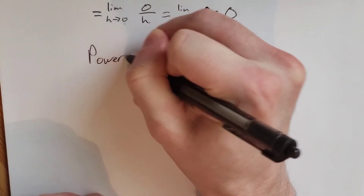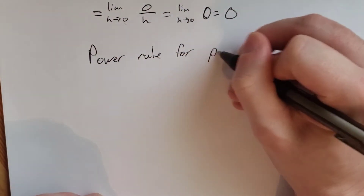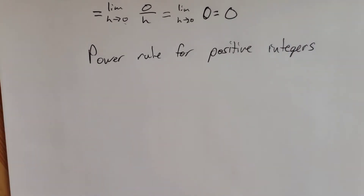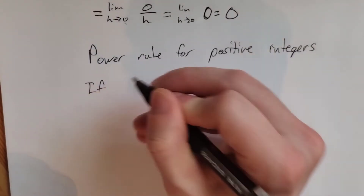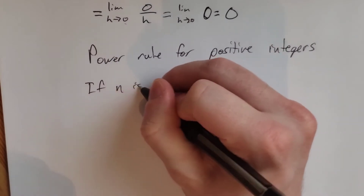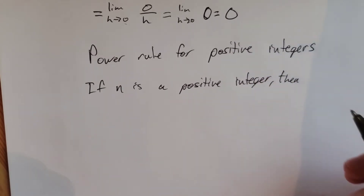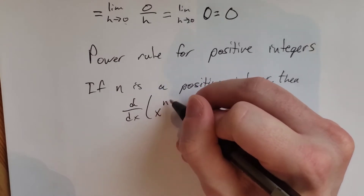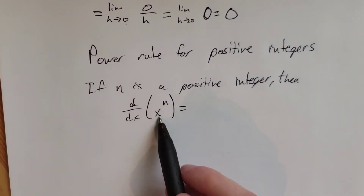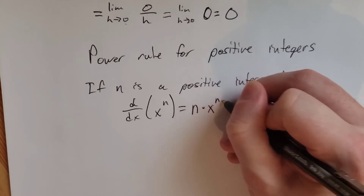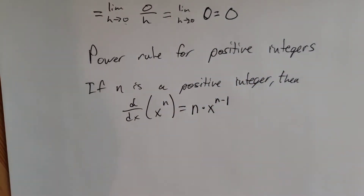Let's do another rule: the power rule for positive integers. We're going to generalize this in just a few minutes, but the only proof we can do right now is for positive integers. The rule is: if n is a positive integer, then the derivative of x to the n — some variable x raised to the nth power — is n times x to the n minus 1. That would be our derivative every single time.